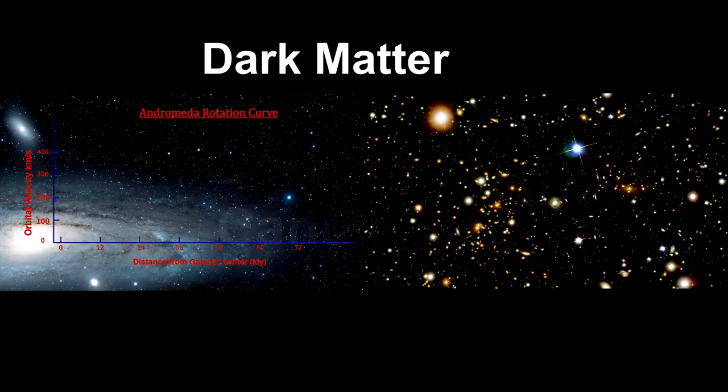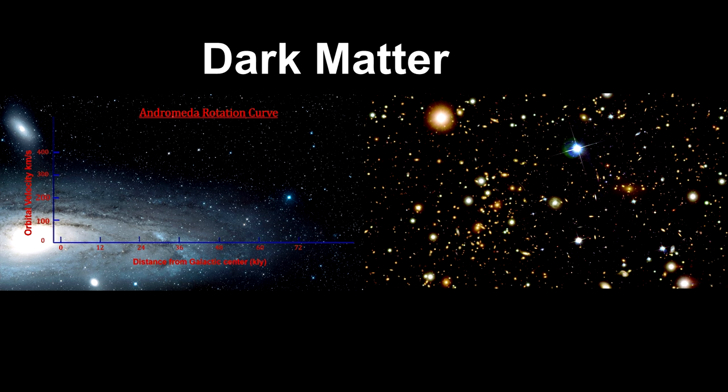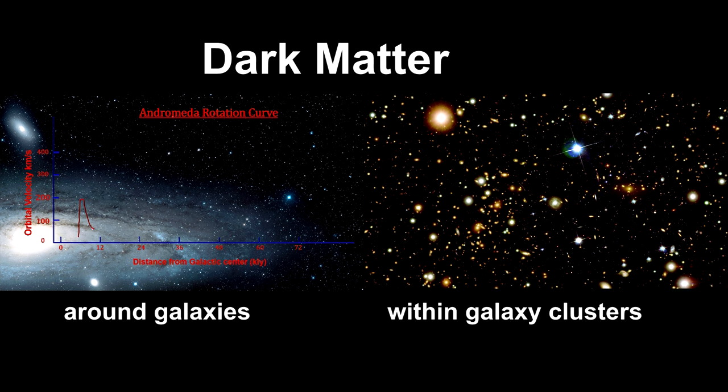We have seen two kinds of evidence for dark matter. One from galaxy rotation curves for dark matter around spiral galaxies, and the other from gravitational lensing for galaxy clusters.